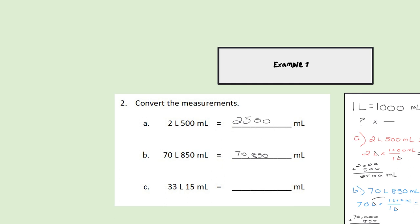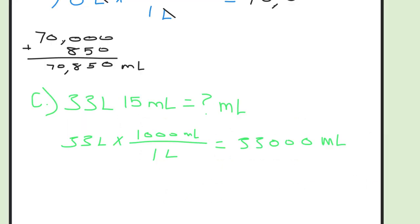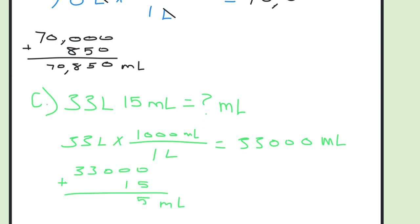Finally, for part C, we are taking 33 liters and 15 milliliters to find out how many total milliliters we will get. Here I completed our first conversion: 33 liters times — we put the 1000 on top because we're multiplying to get to our smaller unit — 1000 milliliters is equal to one liter, and then we will multiply these to get a grand total of 33,000 milliliters. Now all we have to do is add our leftover 15 milliliters: 5 plus 0 is 5, 1 plus 0 is 1, zeros and threes drop down. That gives us a grand total of 33,015 milliliters.